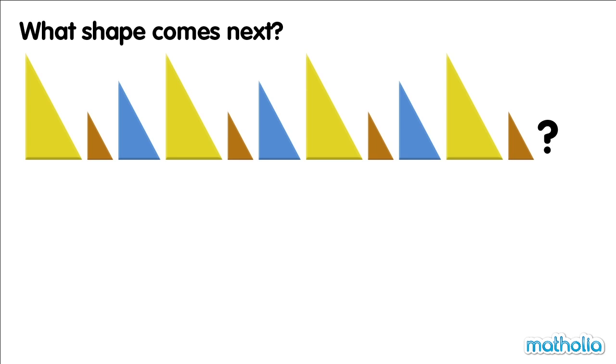What shape comes next? The pattern shows a change in colour and size. This part of the pattern repeats. The next shape after an orange triangle is a blue triangle.